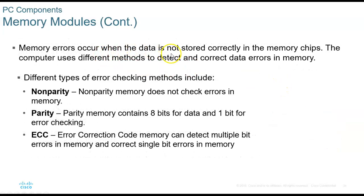Memory errors occur when data is not stored correctly in chips. Error checking types: non-parity (no error checking), parity (8 data bits plus 1 error-checking bit), and ECC (Error Correction Code — detects multiple-bit errors and corrects single-bit errors). When buying memory for a PC, everything must match: number of pins, whether it's parity/non-parity/ECC, and cache level. You cannot just buy a generic memory module.